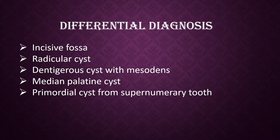Radicular cyst: the pulp is non-vital with loss of lamina dura in the radicular cyst. Dentigerous cyst with mesiodens: radiographic evidence of association with supernumerary teeth will establish the diagnosis of dentigerous cyst. Median palatine cyst: the radiolucent lesion is behind the incisive canal in the premolar-molar area. Primordial cyst from supernumerary teeth: it is more common in the posterior teeth.